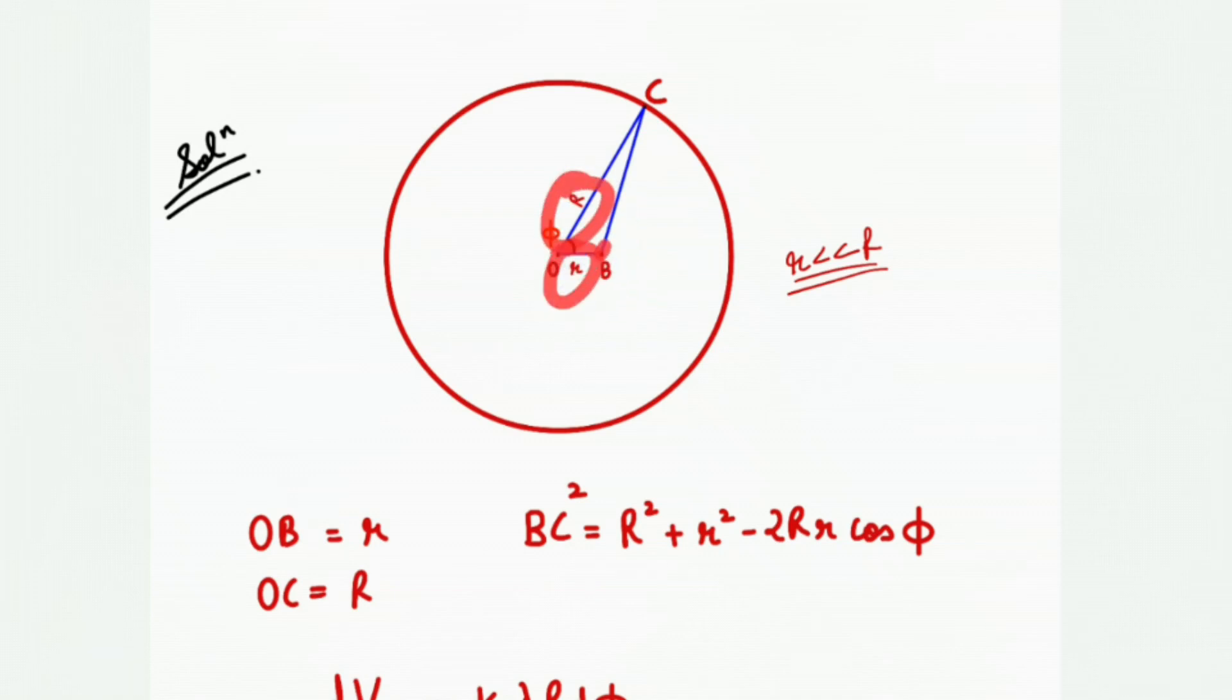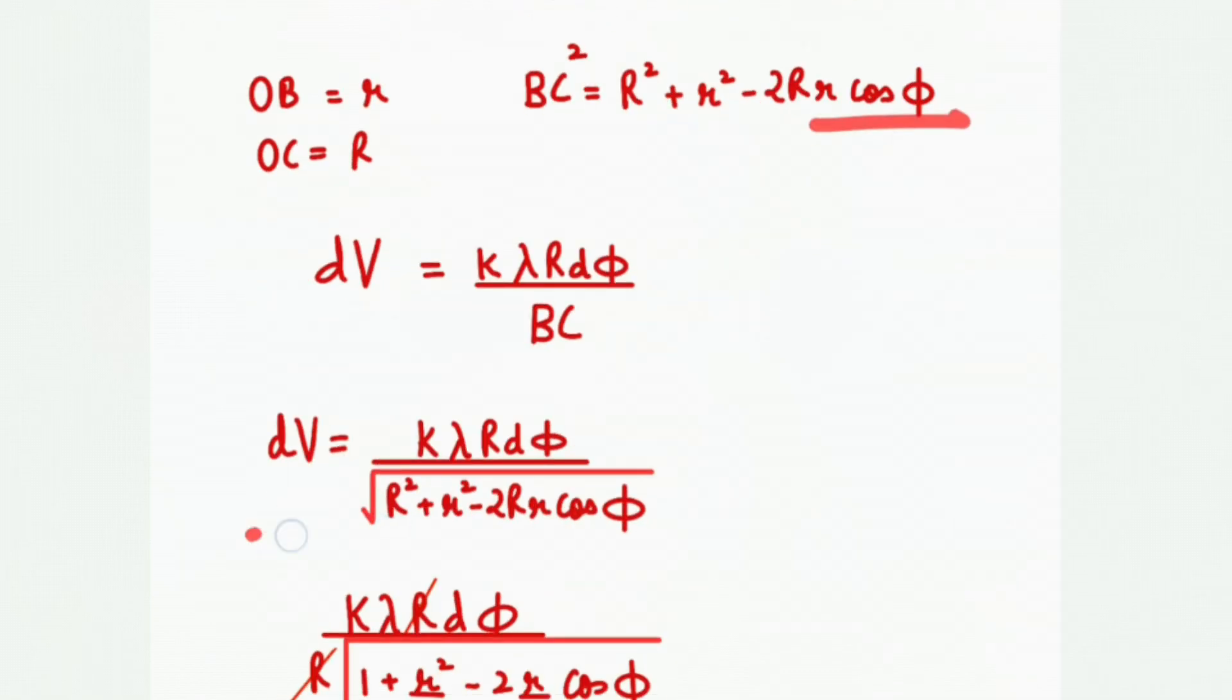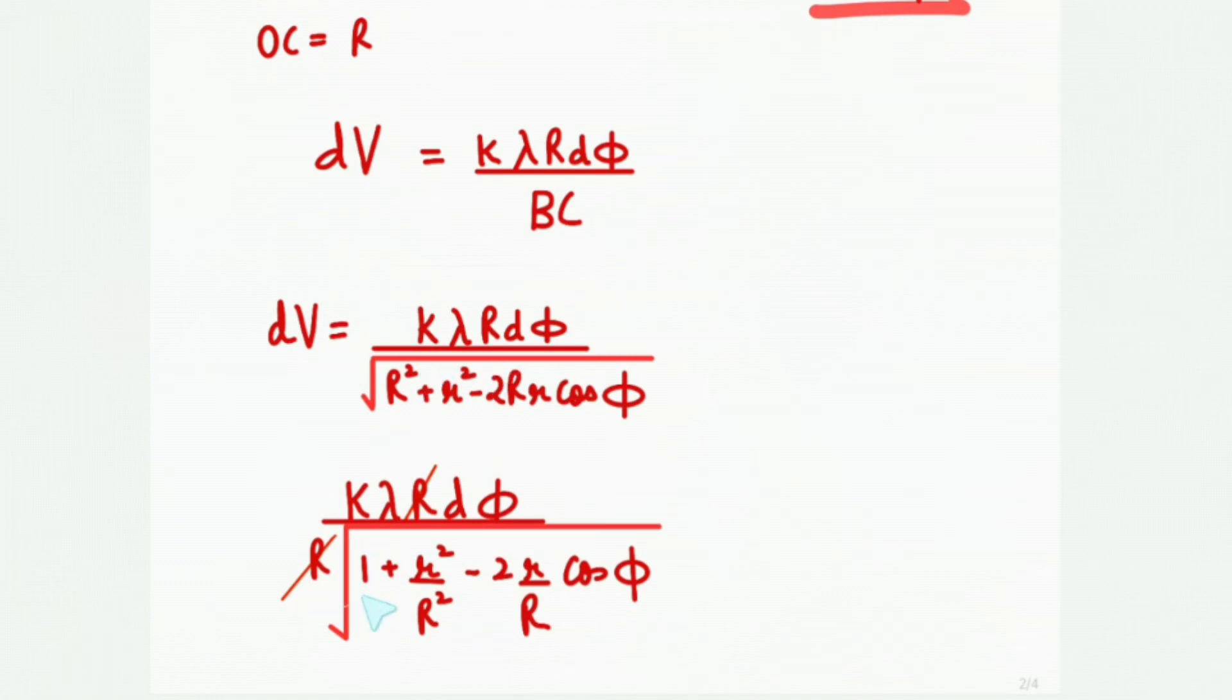Now we'll take capital R square common from denominator. So R will remain, and in numerator also R, so R will cancel. We'll get differential dV equals to this.